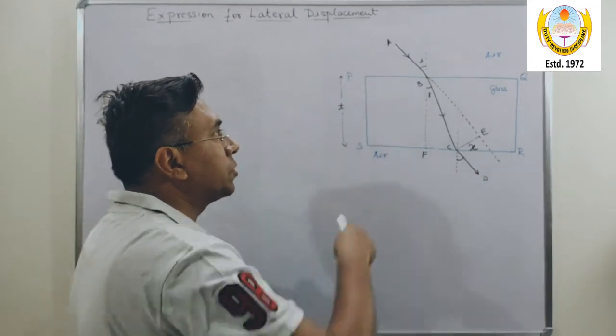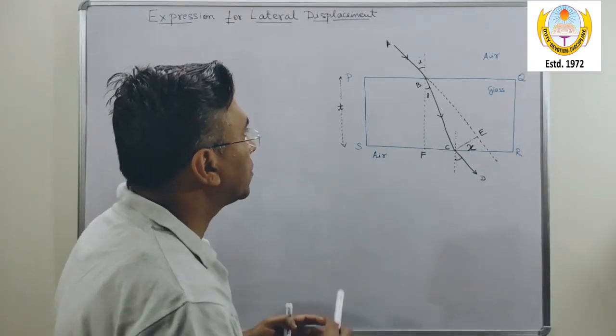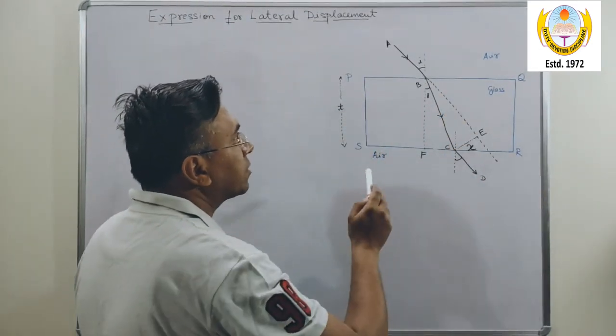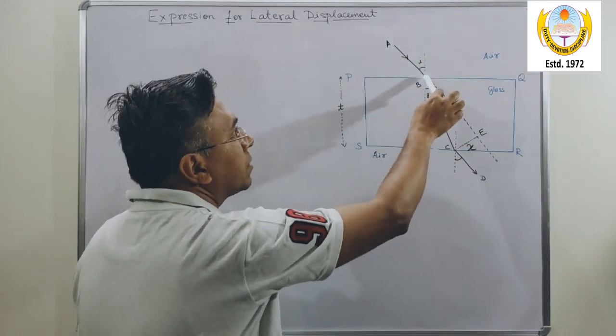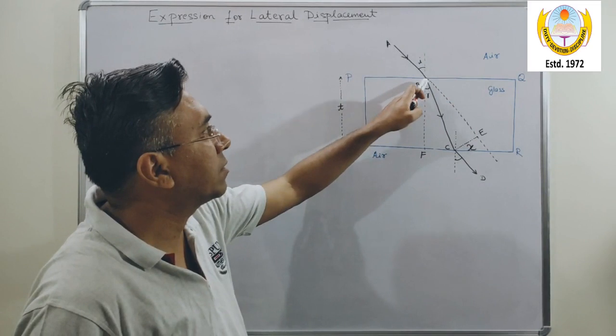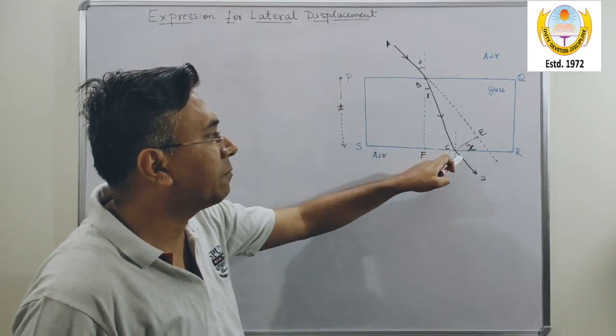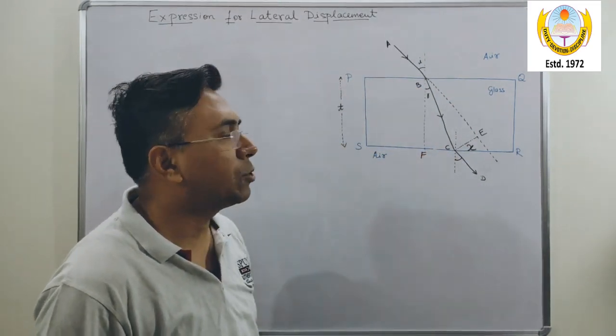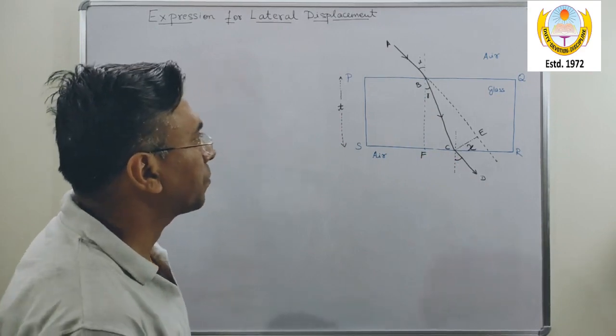Now the figure which you are seeing here is a simple glass slab PQRS. AB is the incident light, on the surface PQ the first refraction is taking place, then BC is the refracted ray, and finally CD is the emergent ray.